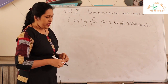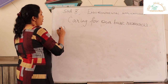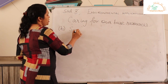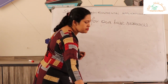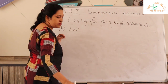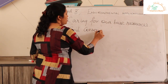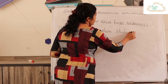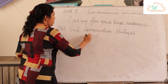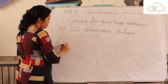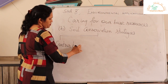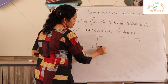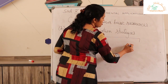Now we are looking at what we can do to stop soil erosion. We have soil conservation strategies, which are ways to reduce soil erosion. There are three of them: the first one is contour bunding, the second one is check dams, and the third one is tree breaks.